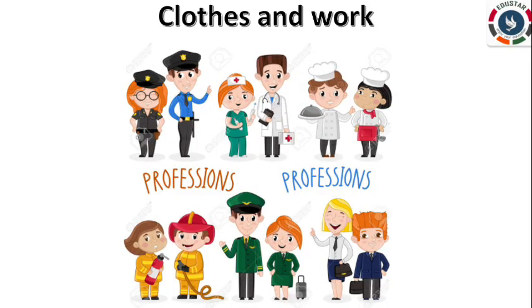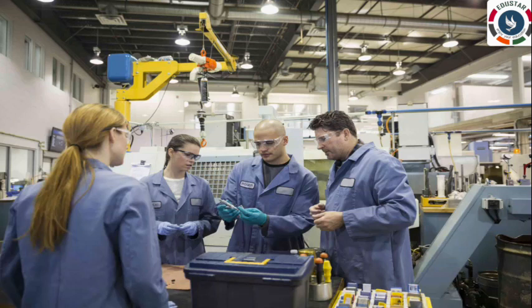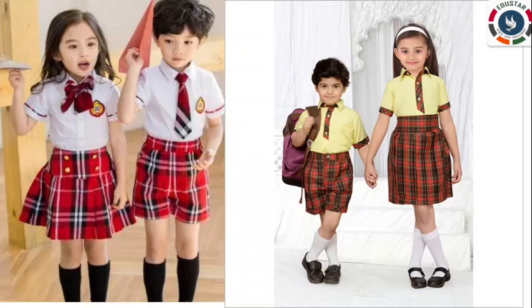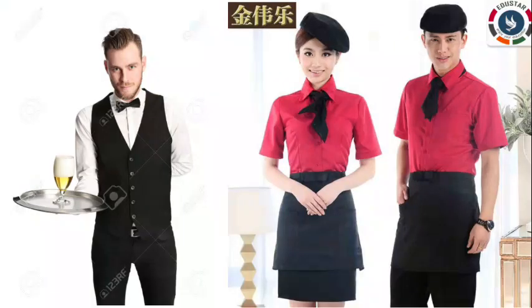Next, clothes and work. Special clothes are worn by some people according to their work. A doctor or nurse wears a white dress on which dirt can easily be seen. People working in factories wear overalls over their clothes to prevent their clothes from becoming dirty. School children wear a uniform so that they can be recognized as students of a particular school. Soldiers wear a uniform made from material that does not tear easily. A waiter wears a uniform so that guests can recognize him and call him to attend to their needs.